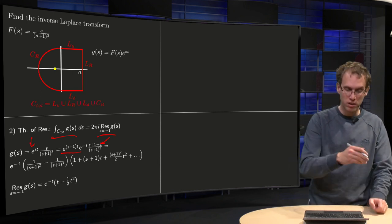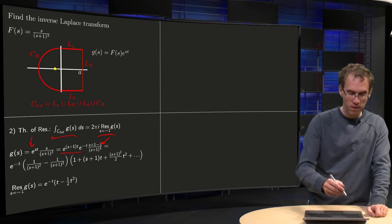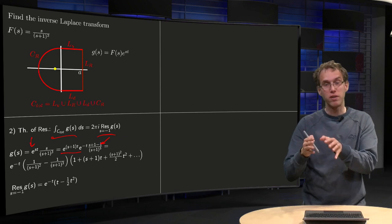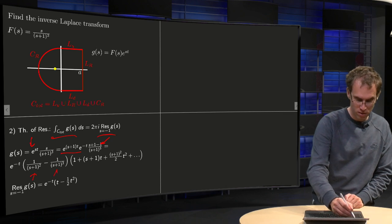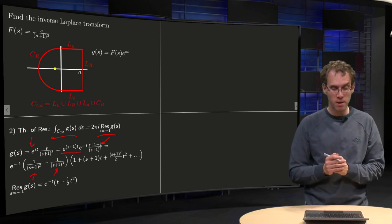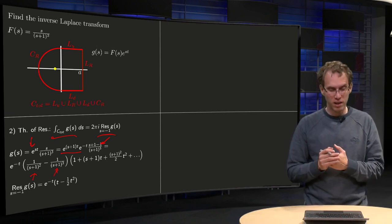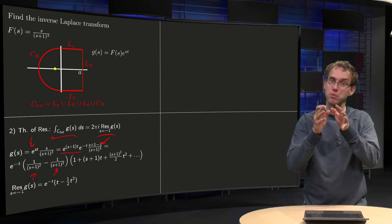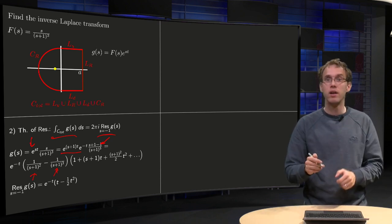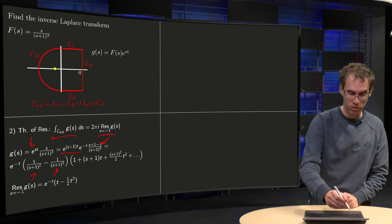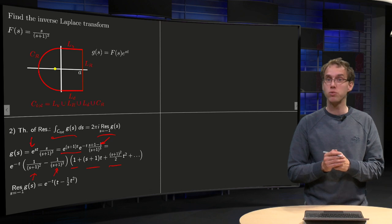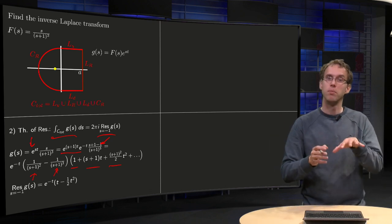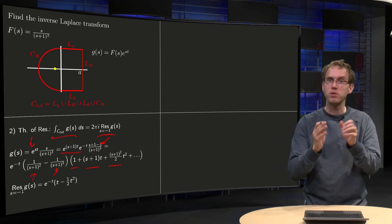So you can take e to the power minus T in front. The (S plus one minus one) over (S plus one) cubed yields one over (S plus one) squared minus one over (S plus one) cubed, and you're left with an exponential (S plus one) times T. The Taylor series of the exponential function is one plus (S plus one) times T plus (S plus one) squared T squared over two factorial, et cetera, as we will only need it up till here.